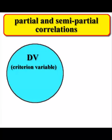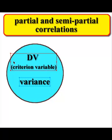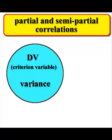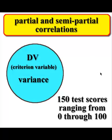So let's take a DV, also known as the criterion variable. That is what you're going to try to predict. Now this circle, this Venn diagram, represents the variance in the scores. So let's pretend we had 150 test scores ranging from 0 to 100.